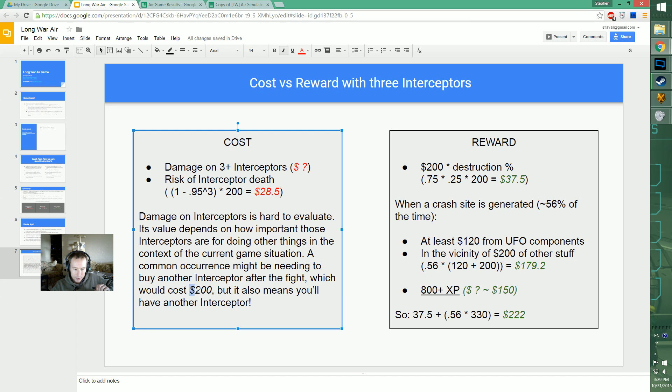The thing about the cost is you may have to buy another interceptor, but it's not exactly like a cost because then you have another interceptor. It's forcing you to make a resource transfer from dollars to more interceptors, but then you do have more interceptors. You'll have to pay maintenance on them earlier - there are costs.